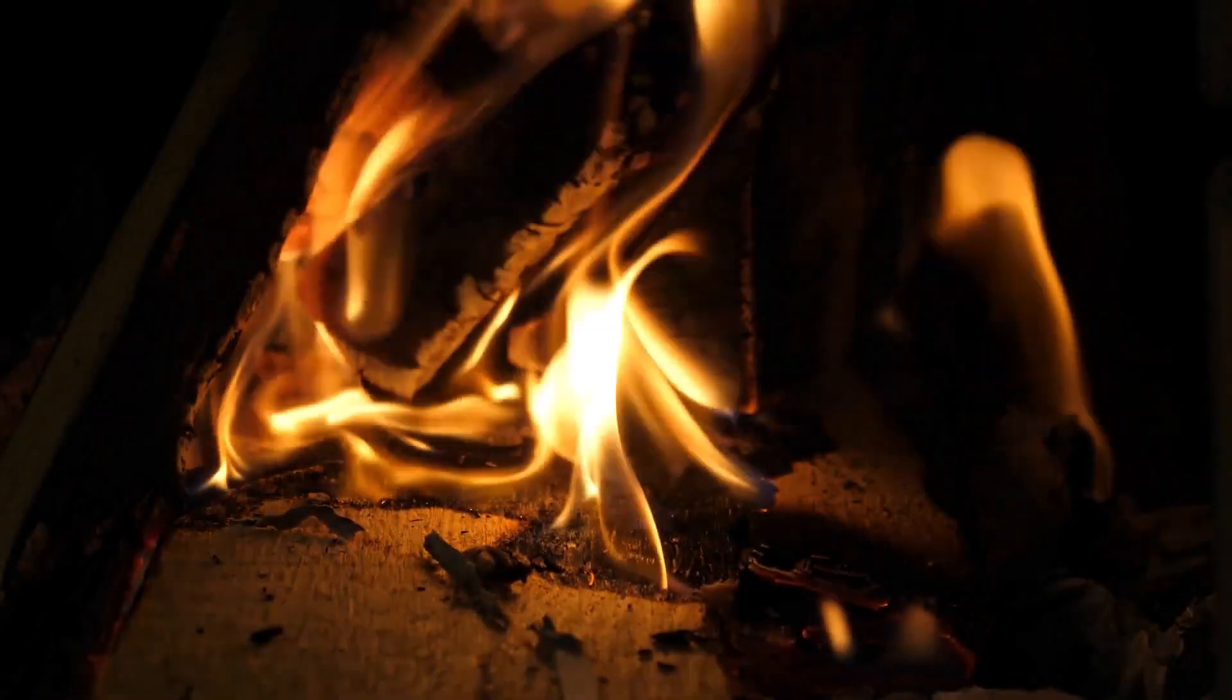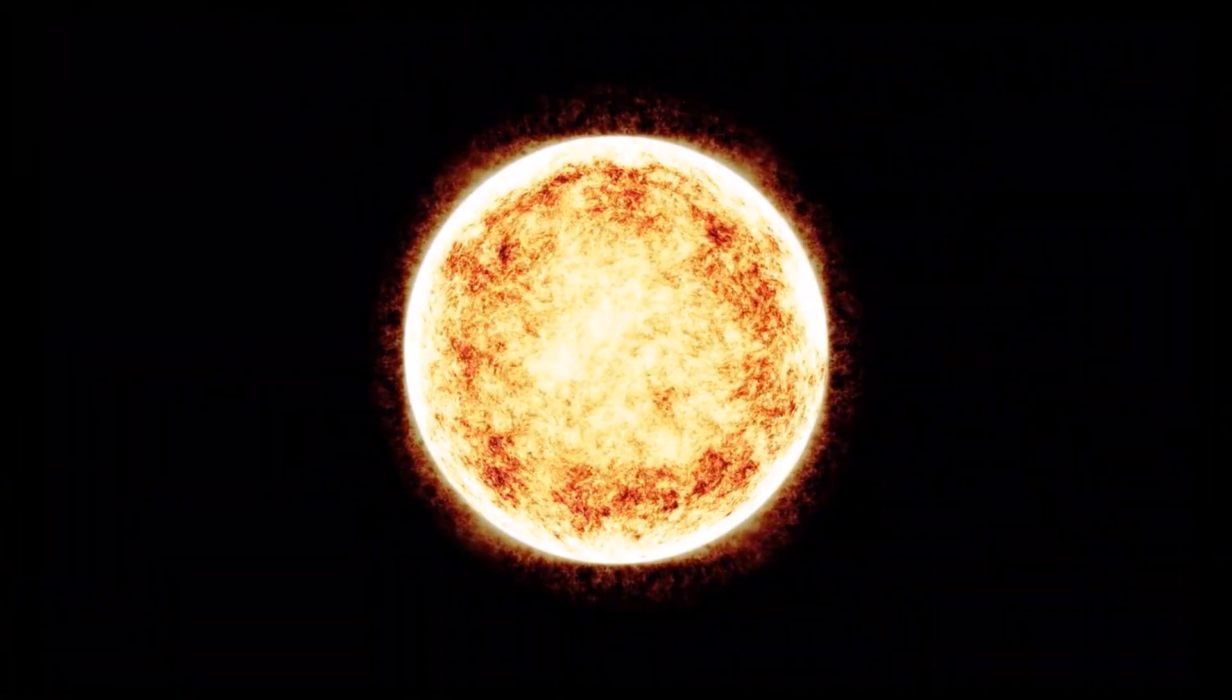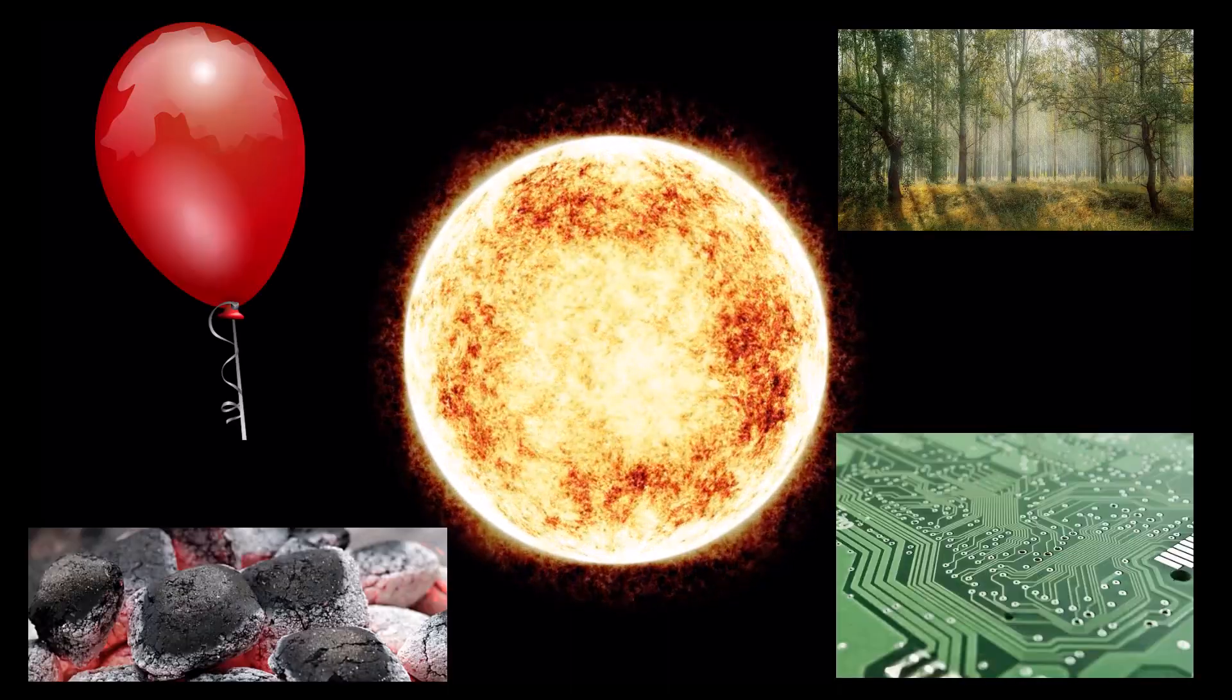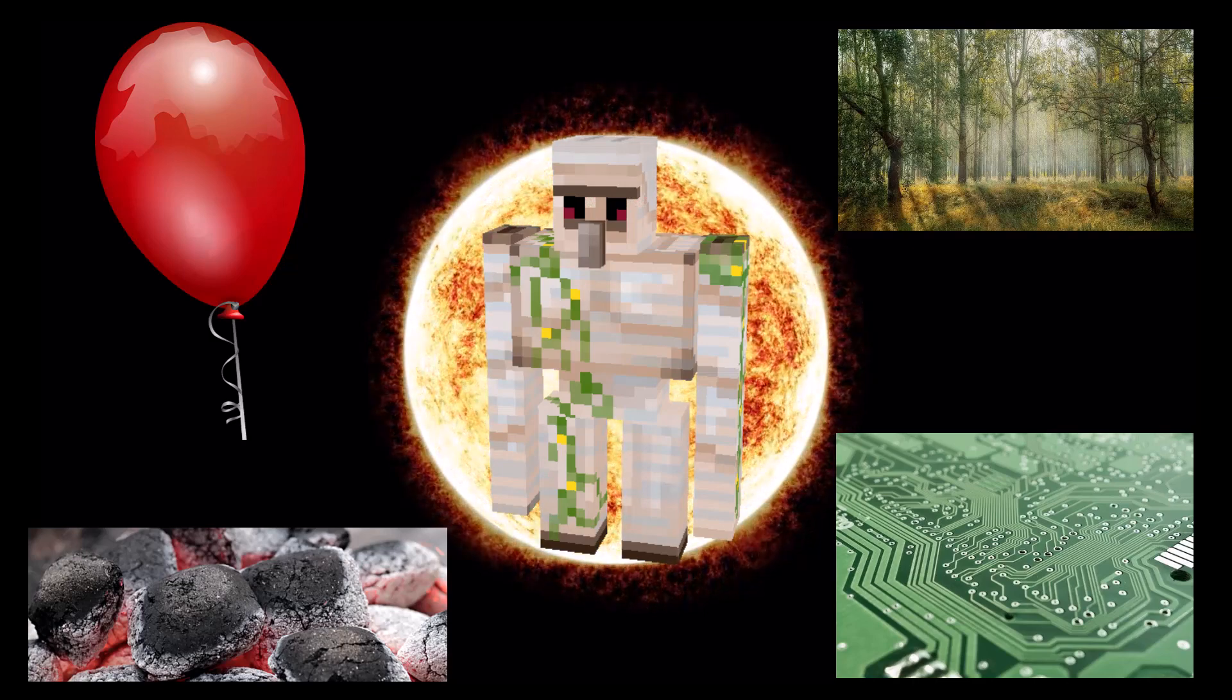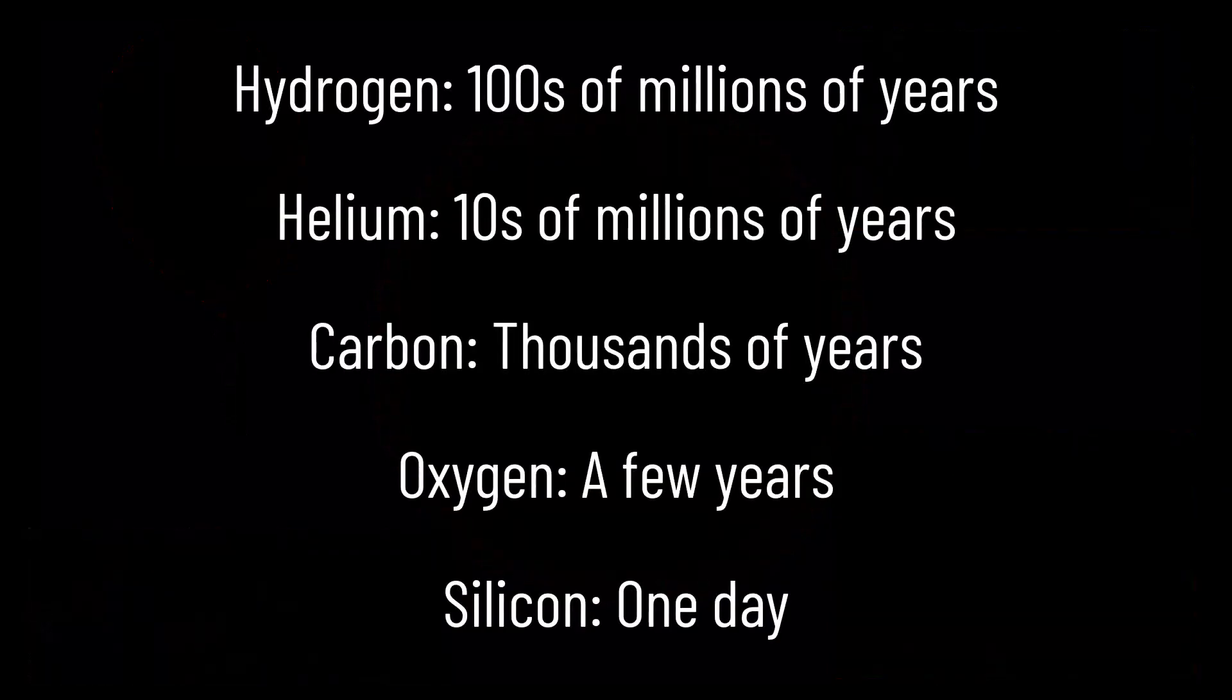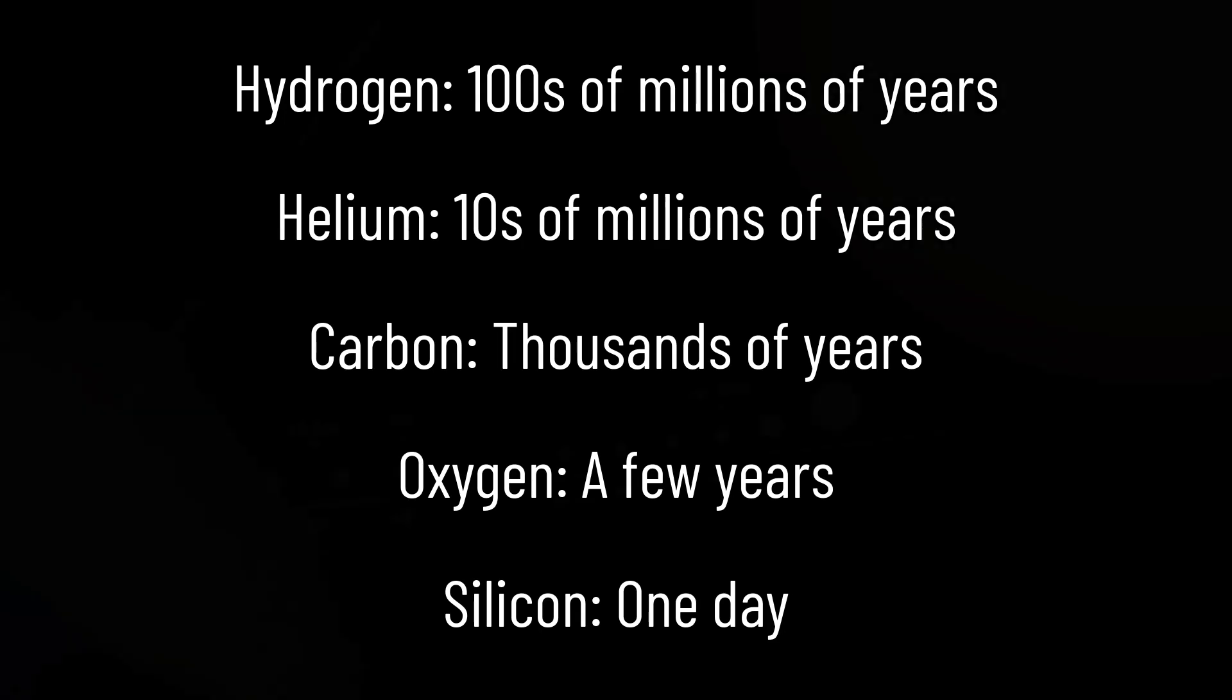But once hydrogen begins to run low and the star can no longer support its weight is when things become really interesting. The death of stars begins with them combining heavier elements such as helium, carbon, oxygen and silicon together in shells, eventually producing iron. The fuel for these processes is far less abundant than the original hydrogen fuel supply and so happen over shorter time periods. For example, stars will only burn silicon for about a day before the core collapses, compared to the millions of years they'll burn hydrogen for.